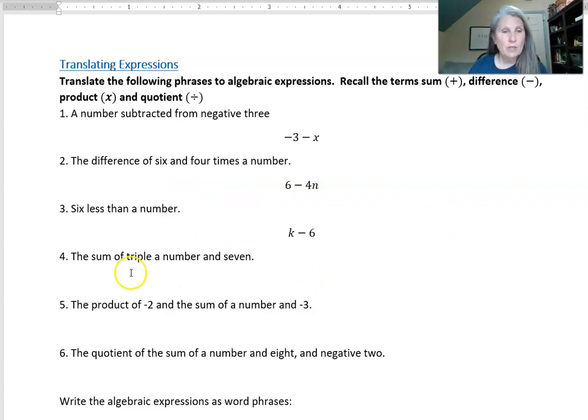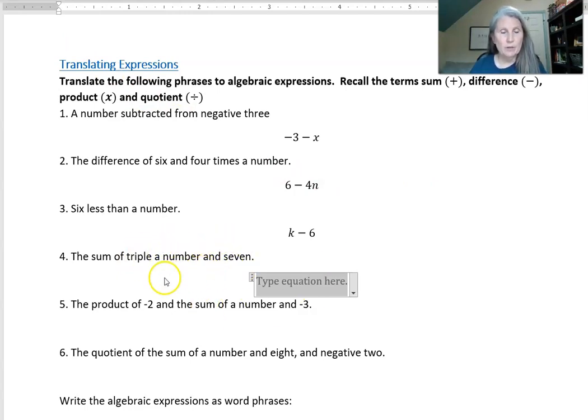The next one is the sum of triple a number and seven. When I hear sum I know it's addition and that 'and' in the middle separates the two parts. Triple a number - triple a number is like getting triple time at work, right? So make sure you don't say to the third power because it's just three times something when it's triple. And then 'and seven' means plus seven. So triple a number and seven.